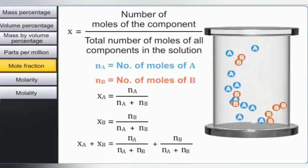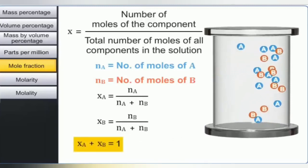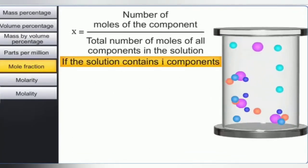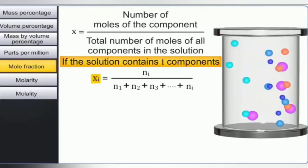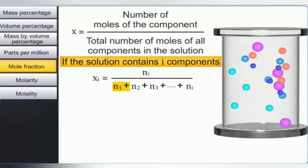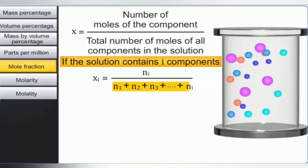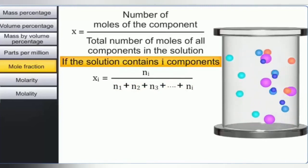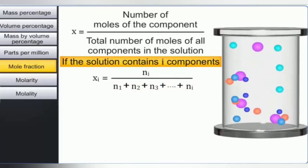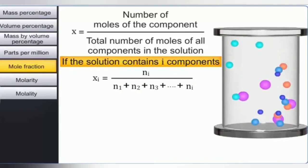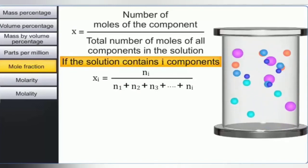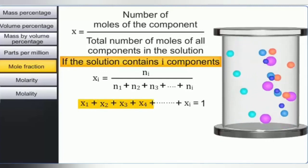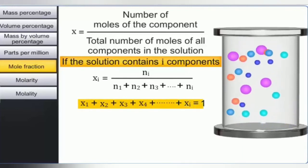That is, xA plus xB equals 1. In a solution containing i number of components, the mole fraction of the i-th component, xi, is expressed as ni divided by (n1 + n2 + n3 + ... + ni). It is important to note that the sum of the mole fractions of all components of a solution is always equal to 1. That is, x1 + x2 + x3 + ... + xi equals 1.